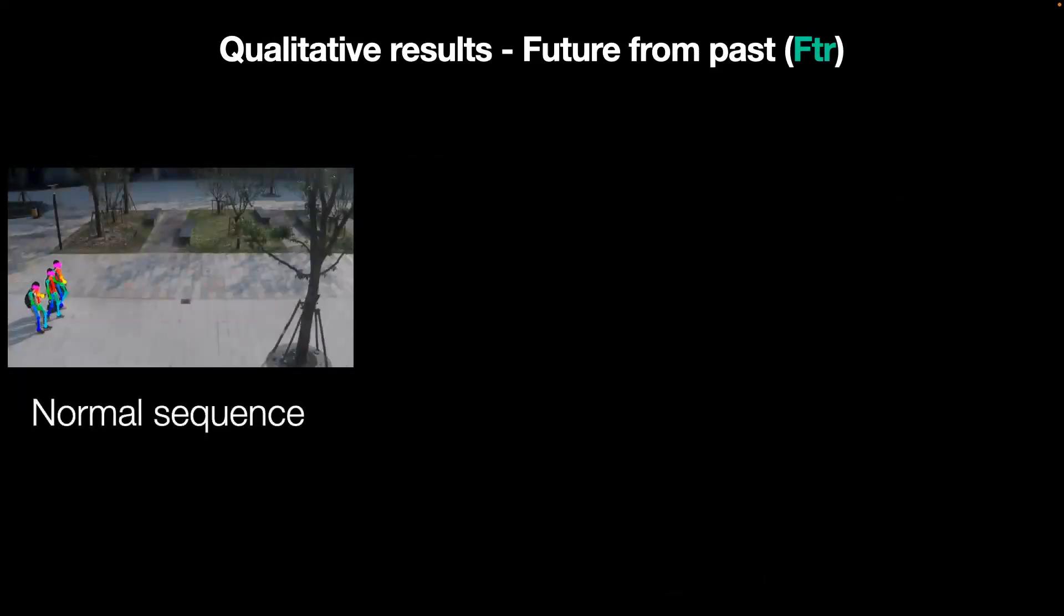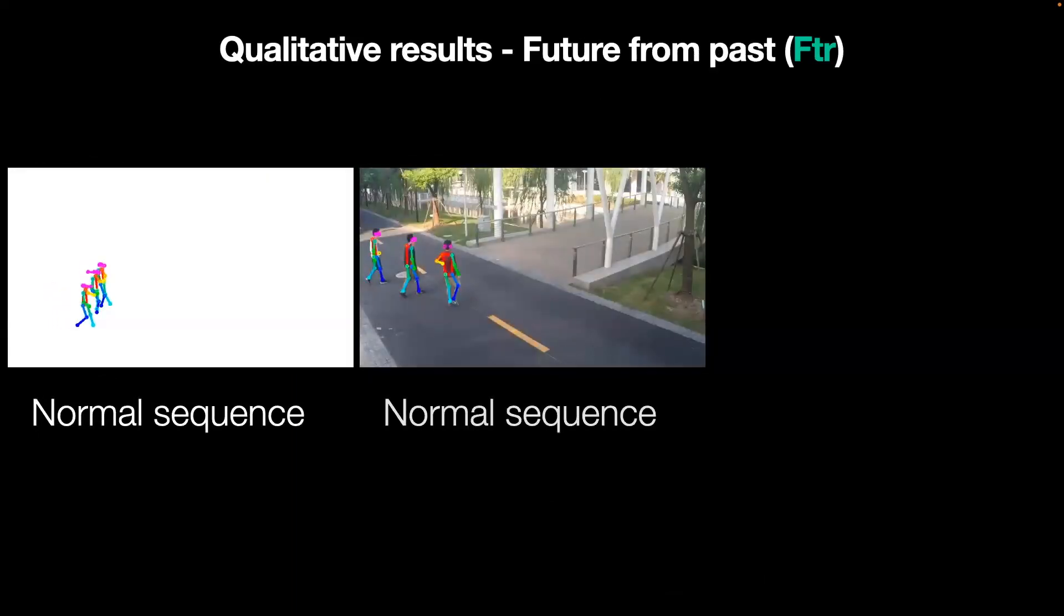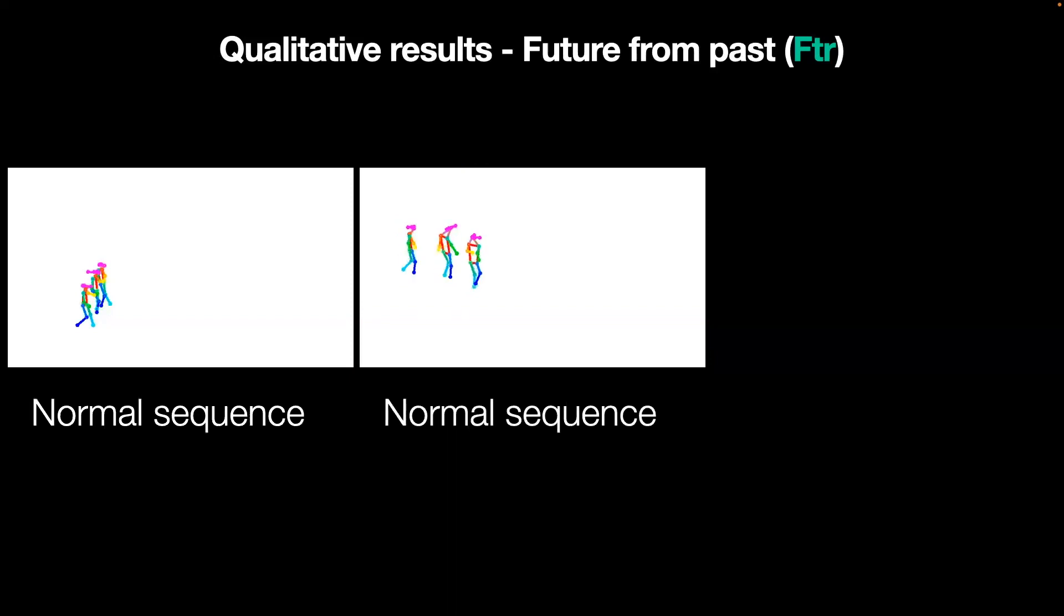We also provide qualitative results of extrapolated future sequences from observing past segments of the trajectory for normal trajectories in which the future can be effectively reconstructed, and for anomalous sequences in which the reconstruction allows for the easy detection of anomalies.